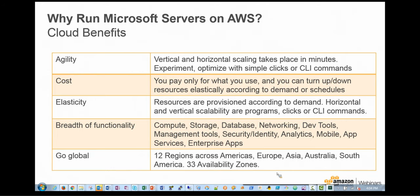Another benefit is breadth of functionality. In 2011 we released 80 significant services and features; in 2012, about 160; in 2013, 280; in 2014, 516; and last year 722 new services — an increase of nearly 40% year-over-year. As our customer, you benefit from continual innovation and get the latest features instantly. We also have 13 regions across all continents, now including India, supporting 35 availability zones around the world.